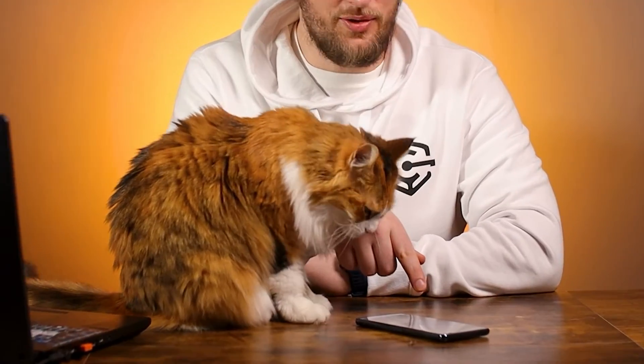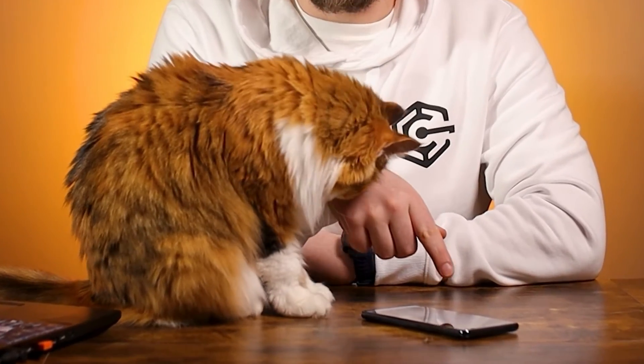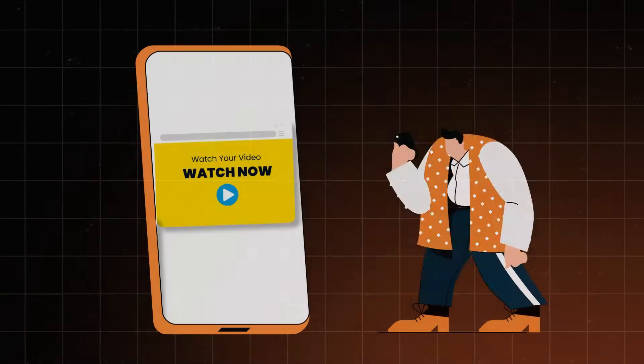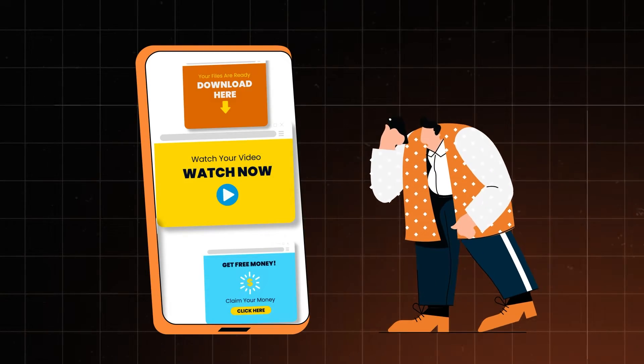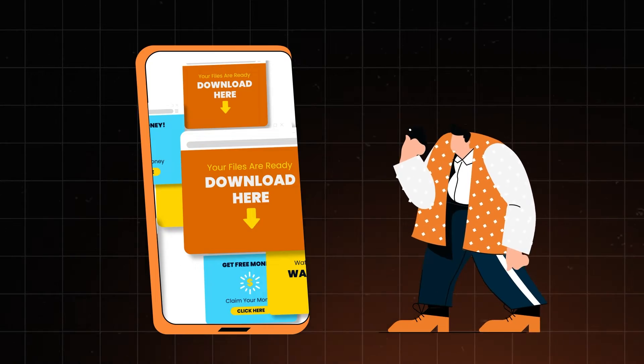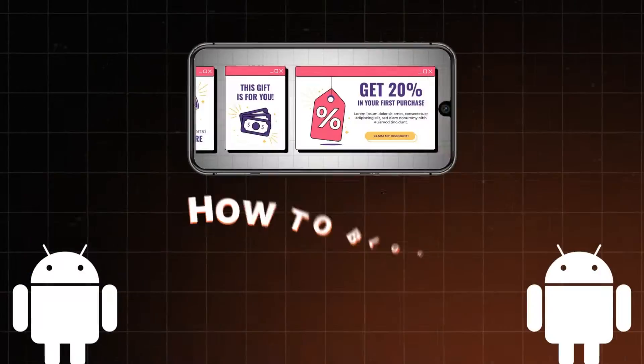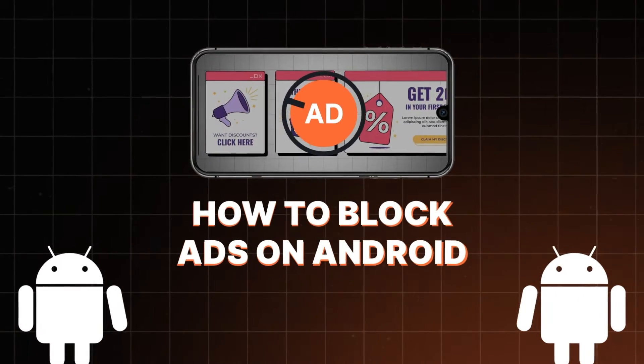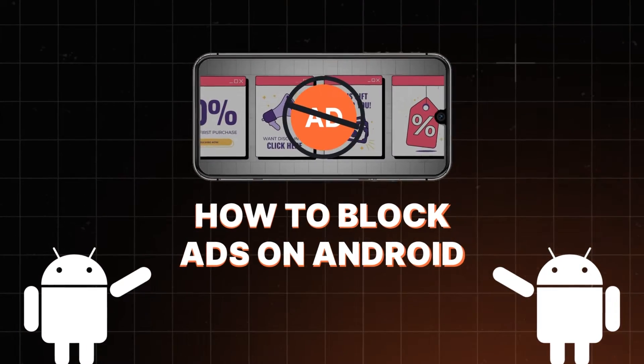If, like Mittens here, you're using Android without an ad blocker, you're gonna be getting irritated on so many levels. It's gonna get buried by pop-ups, notifications, and ads, whether the cat is browsing or gaming. So in this video, I'll show you how to block ads on Android phone.